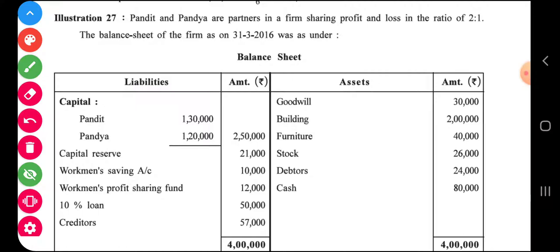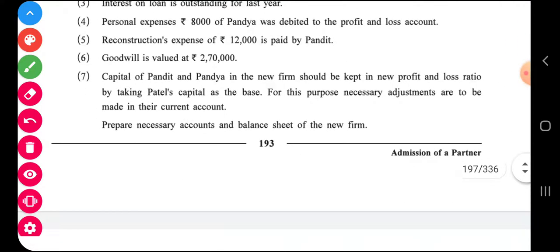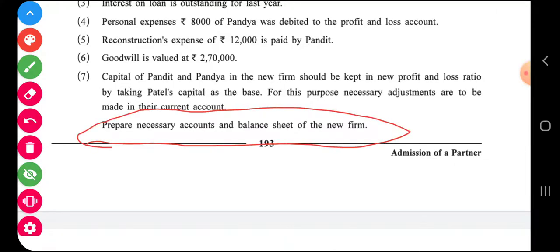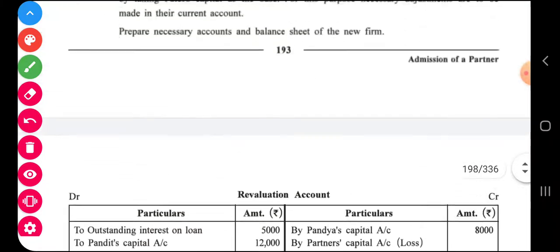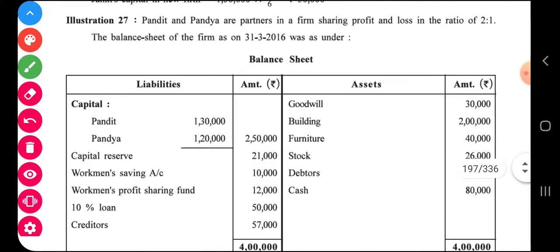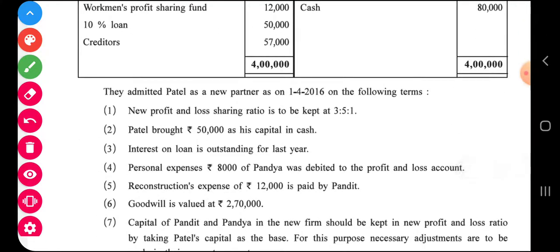Pandi and Pandit are partners in a firm sharing profit in the ratio of two is to one. The balance sheet of their firm is given. There is an admission of Patel. What is asked is to prepare the necessary accounts and a balance sheet. Necessary accounts include the revaluation account, partners' capital, cash, and balance sheet. The old ratio is two is to one. Balance of capital is recorded on the credit side of partners' capital, and cash balance is recorded on the debit side of the cash account.